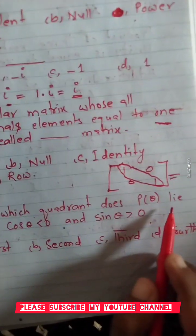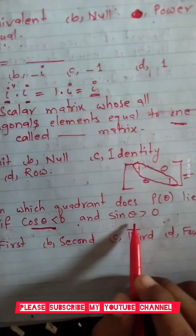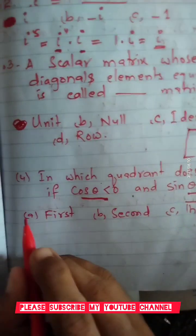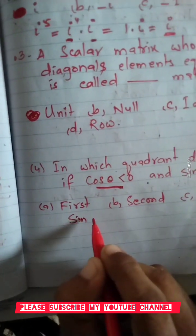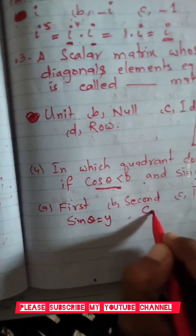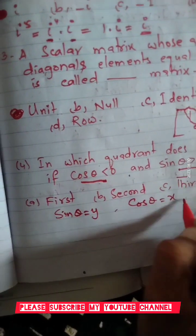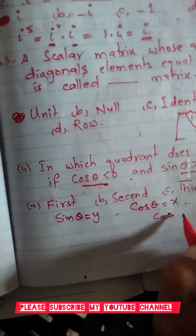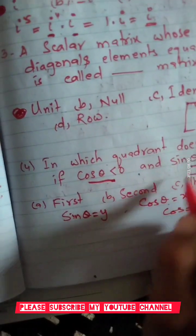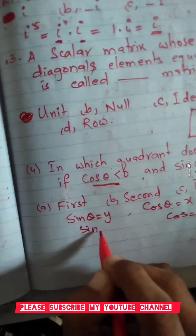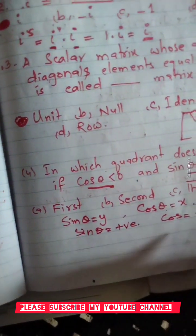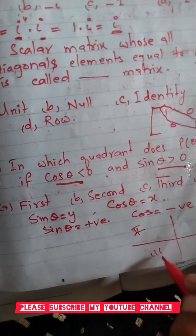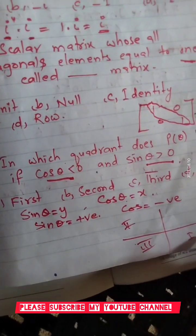In which quadrant does the point lie if cos theta is less than zero and sin theta is greater than zero? cos theta is negative and sin theta is positive. The answer is the second quadrant, where sin is positive and cos is negative.